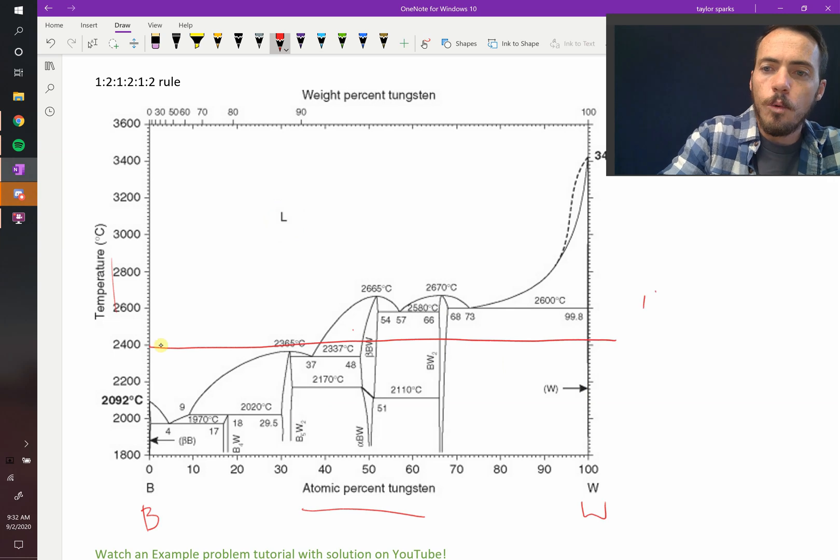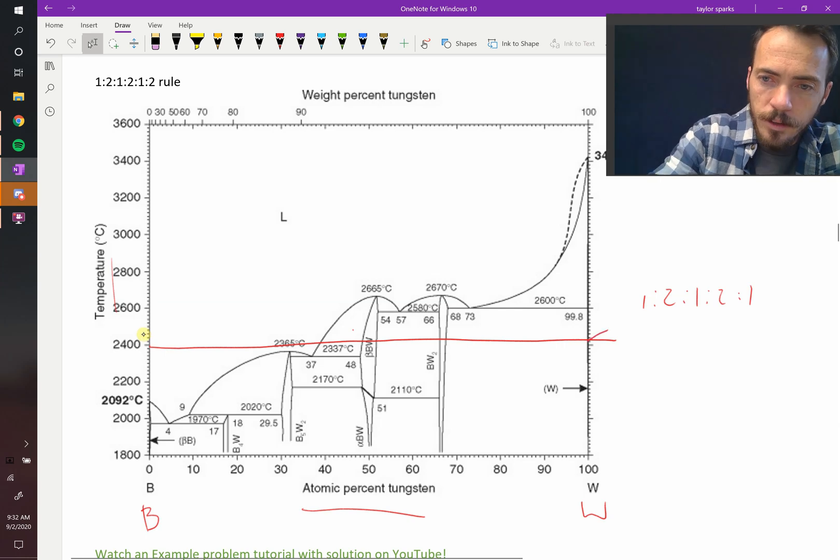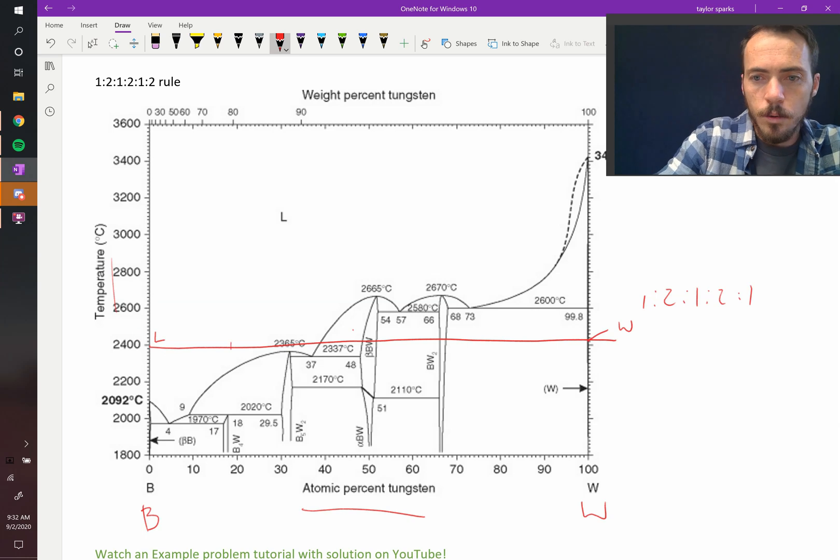You follow the 1-2-1-2-1 rule. So at the far left, or the far right, we've got single phases. So right here, we know that this right there is a single phase, it's pure tungsten. And over here, we start out with pure liquid, so it's also a single phase. So this is a 1, and that's a 1. So the next phase that this one touches is going to be a 2.